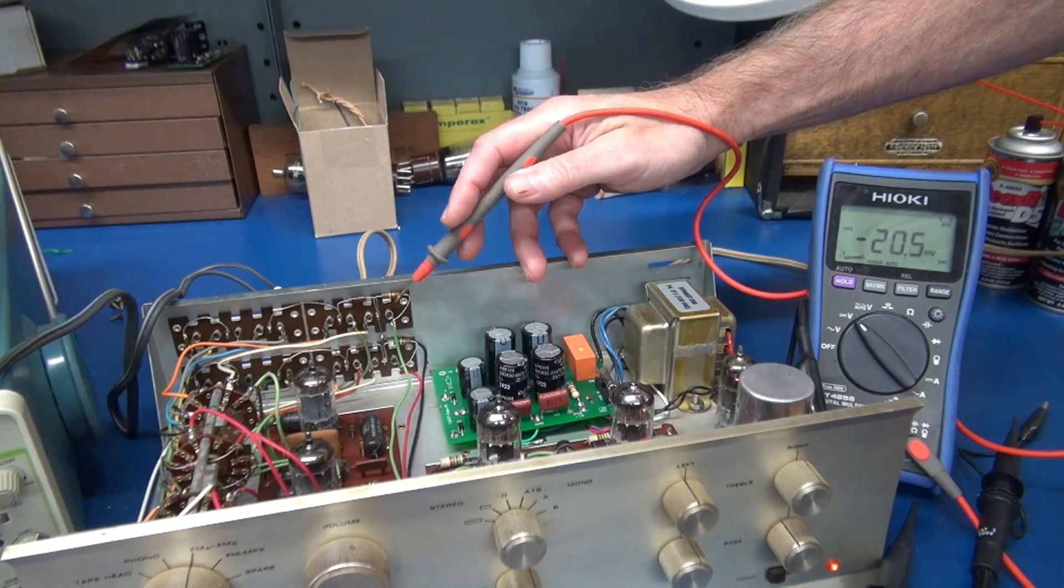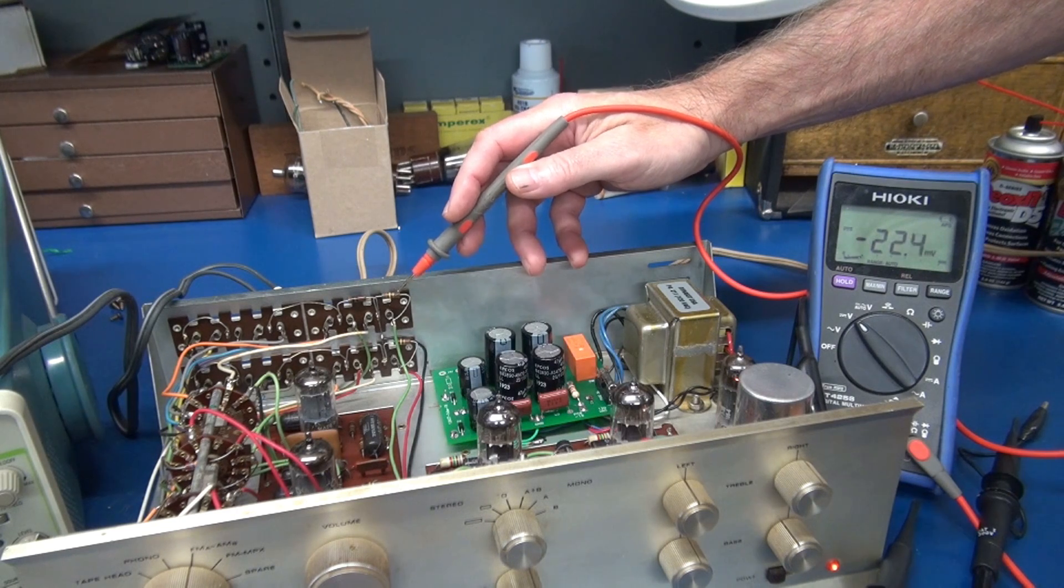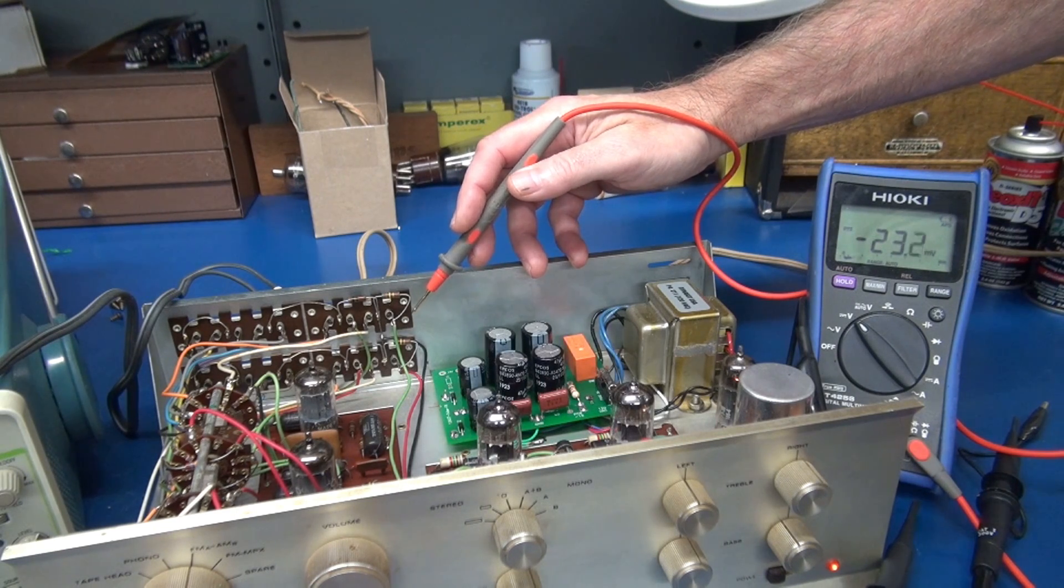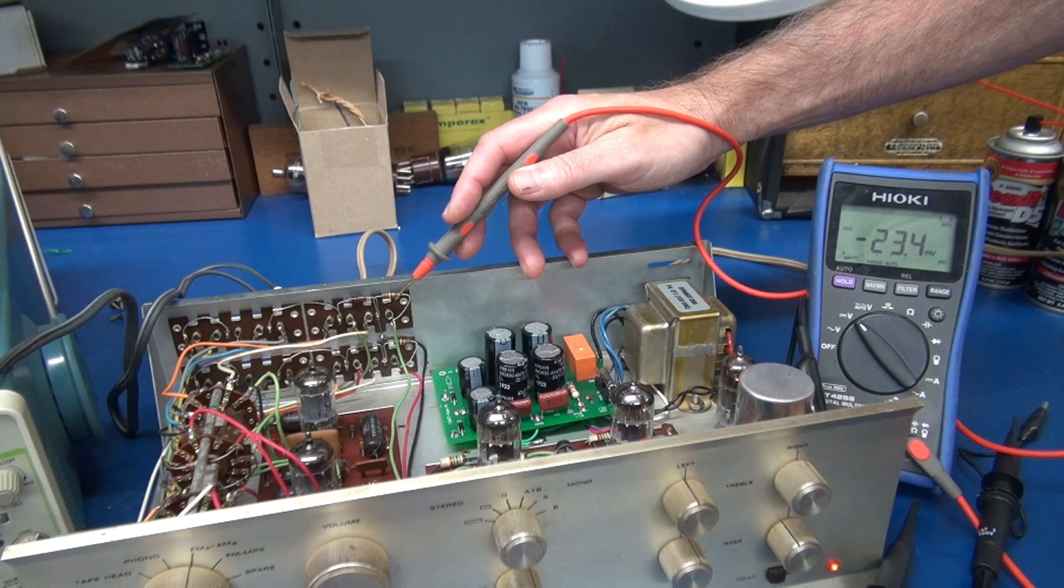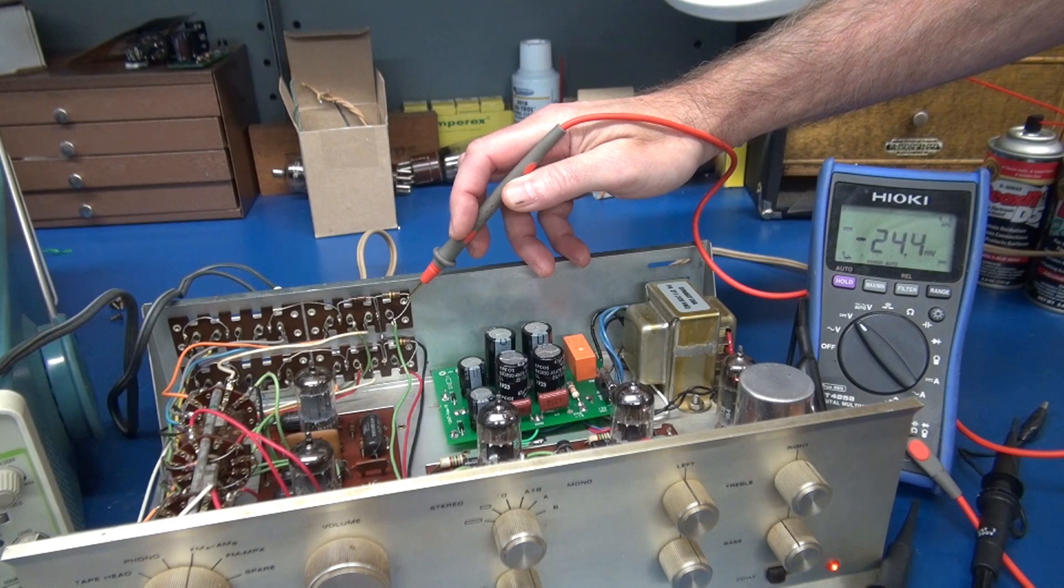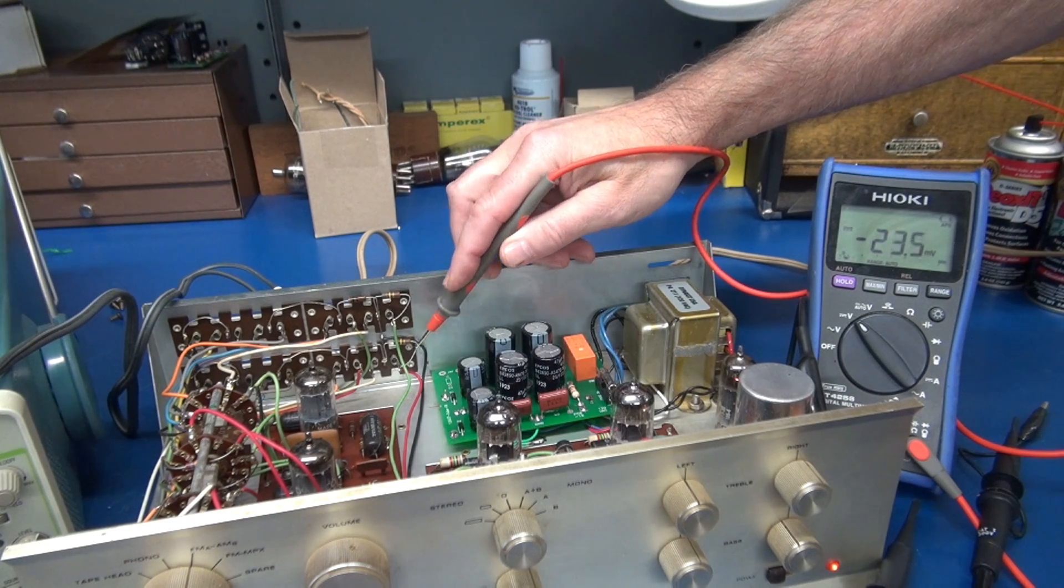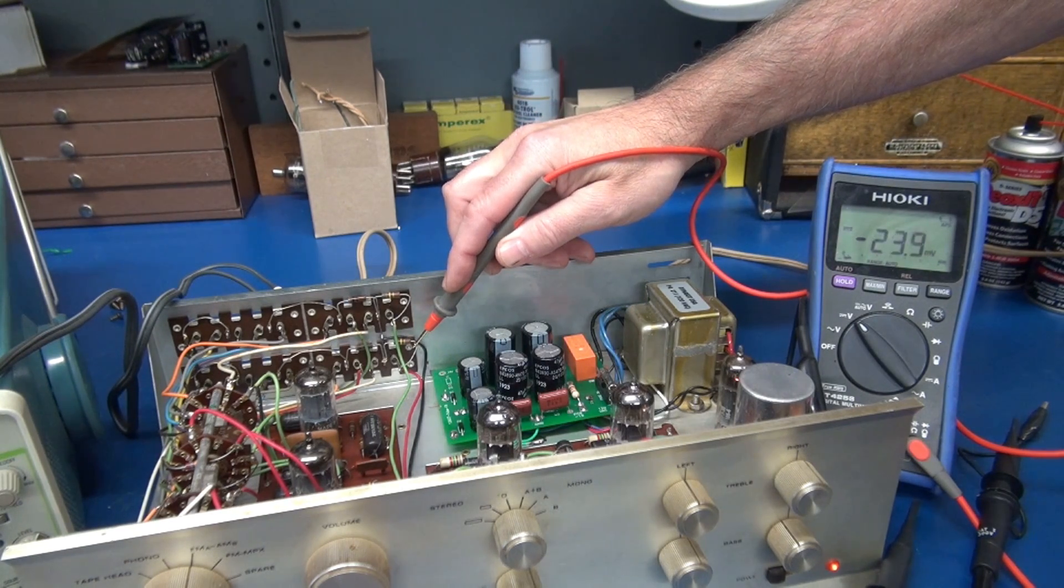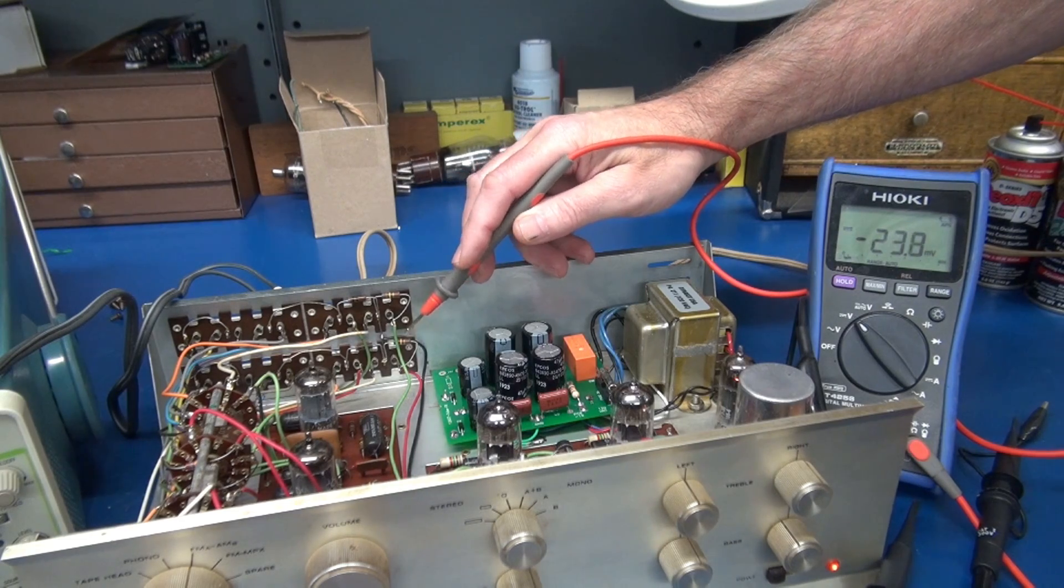Next, you want to check the voltages on the two RCA output jacks, and these should be very close to zero volts. So here is one. I have got negative 24 millivolts, and here is the other channel, also negative 24 millivolts.